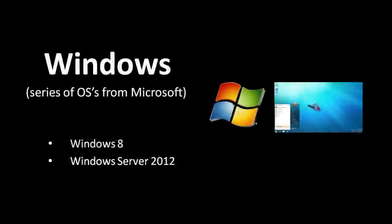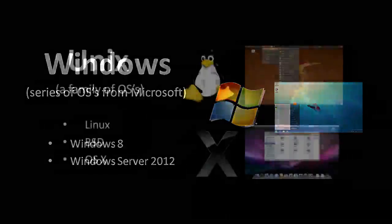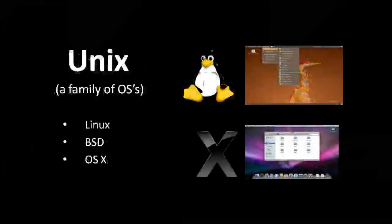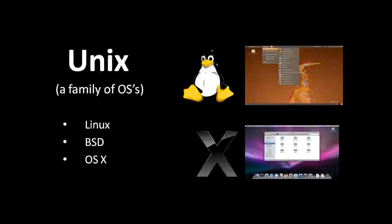The most widely used operating system for PCs today is of course Microsoft's Windows. The main alternatives to Windows are all descendants of the Unix operating system, which was created in the early 1970s. These descendants don't use any actual code from the original Unix, but they share some common structure and conventions.